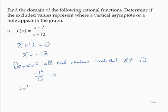So when x equals negative 12, a vertical asymptote appears in the graph.